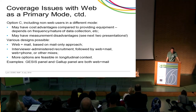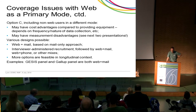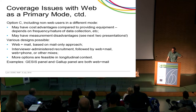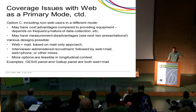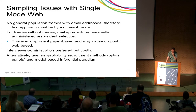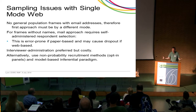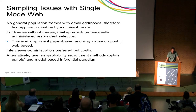Option C — where the mixed-mode designs really come in — is to include non-web users in a different mode, which may be easier and more acceptable for them, and may have cost advantages over providing hardware. There may be measurement disadvantages, as the other presentations will discuss. One approach combines web with mail: approaching everyone by mail, inviting those who can to do a web survey but otherwise providing a self-completion questionnaire, or combining with interviewer-administered recruitment.